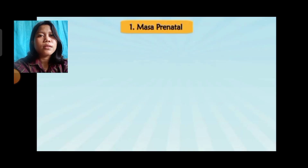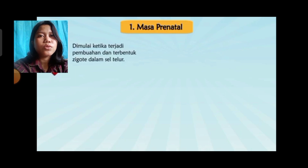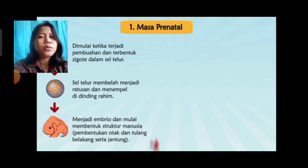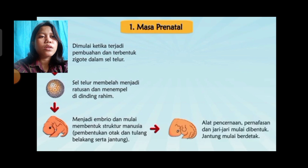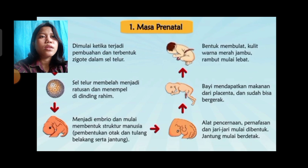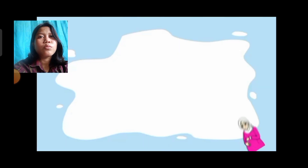Masa prenatal dimulai ketika terjadi pembuahan dan terbentuk zigot dalam sel telur. Sel telur membelah menjadi ratusan dan menempel di dinding rahim. Menjadi embryo dan mulai membentuk struktur manusia — alat pencernaan, pernafasan, dan jari-jari mulai dibentuk, jantung mulai berdetak. Bayi mendapatkan makanan dari placenta dan sudah bisa bergerak. Bentuk membulat, kulit warna merah jambu, rambut mulai lebat.